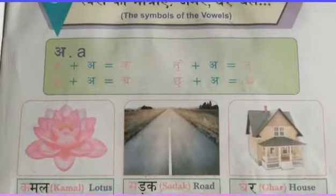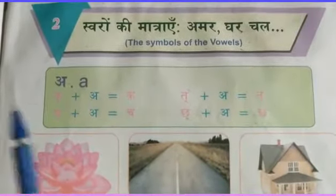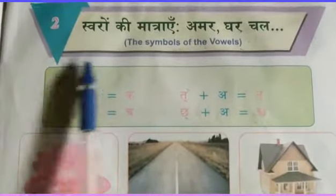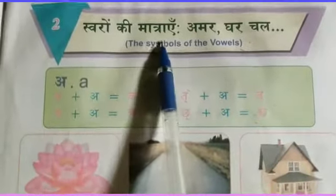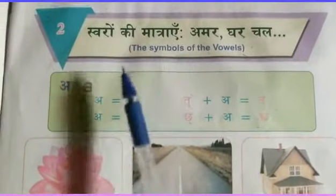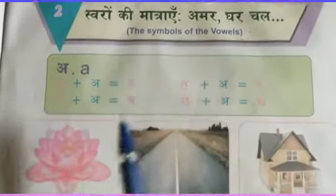Hello students, today we are going to revise lesson 2, Swarongki Matraying — the symbol of the vowels.